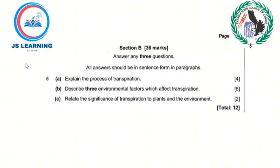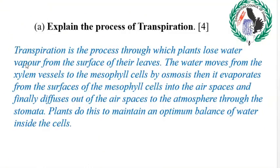Question A: explain the process of transpiration. Transpiration is the process through which plants lose water vapor from the surface of their leaves. The water moves from the xylem vessels to the mesophyll cells by osmosis, then it evaporates from the surfaces of the mesophyll cells into the air spaces, and finally diffuses out of the air spaces to the atmosphere through the stomata.